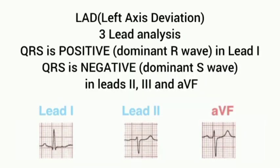Now this is LAD — left axis deviation. In this, you can see three lead analysis. QRS is positive or dominant R wave in lead 1. QRS is negative in inferior leads: lead 2, lead 3, and aVF.